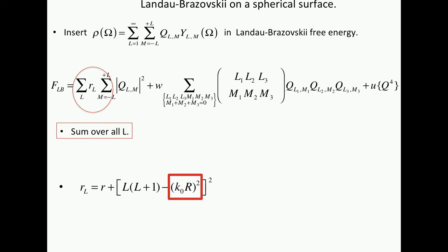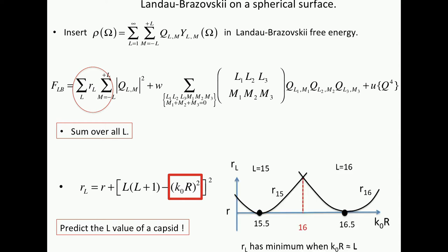So the big payoff is that you now get an expression for the stability for different L. This R sub L here is our old R, the one which you got from the periodic term. These two terms come from the Landau-Brazovsky one. L times L plus 1 minus K0R squared. This is this wave number K0, 2 pi over the protein size, and R is the radius of the shell. And with this, you can now predict the L value of the capsid, which actually is a parameter. It's like a variation parameter. Here's how it works. You plot this term for different L. They're all parabolas as a function of K0R. They all have a minimum when K0R is close to L squared.